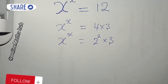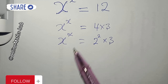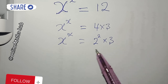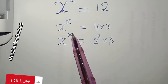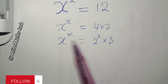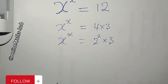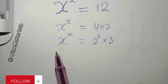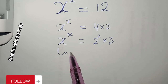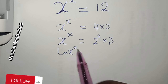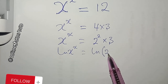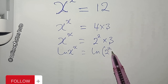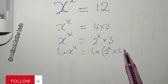The next thing I want to do is take the natural log of both sides, so that I can bring the power x down. Doing that, I have: natural log of x to the power of x equals the natural log of 2 to the power of 2, multiplied by 3.